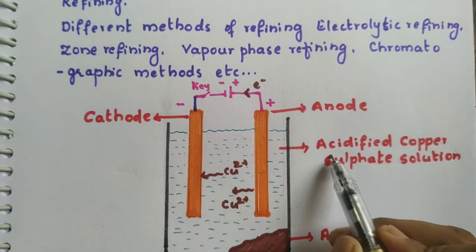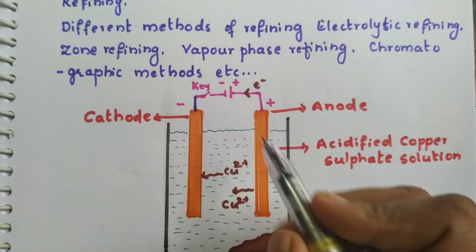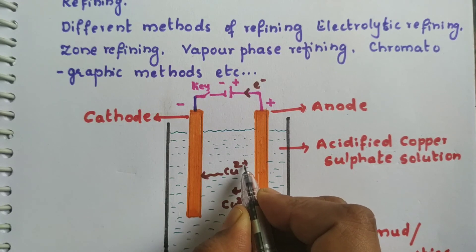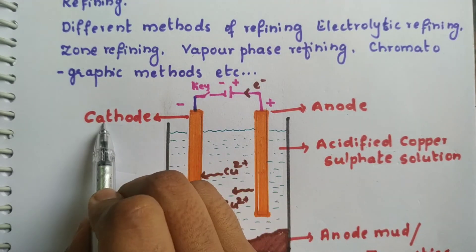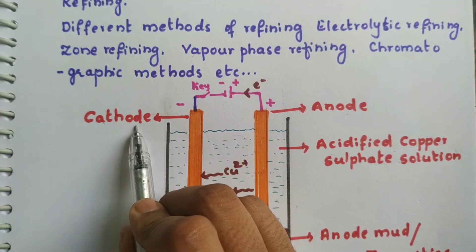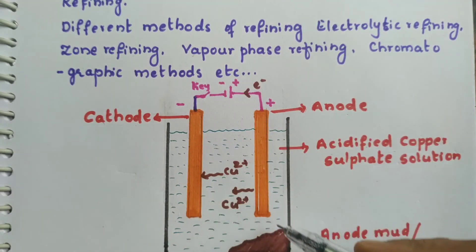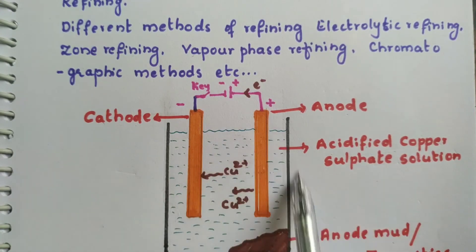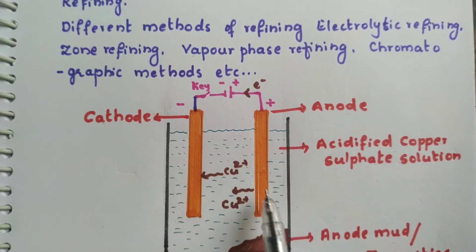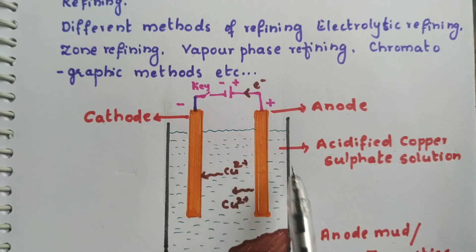When electricity is passed, the pure metal — as a positively charged cation — moves towards the negatively charged cathode and gets deposited there. All the impurities start settling down near the anode, which is why this is called anode mud. So the impure metal is used as anode and pure metal as cathode; pure metal deposits on the cathode and impurities settle as anode mud.